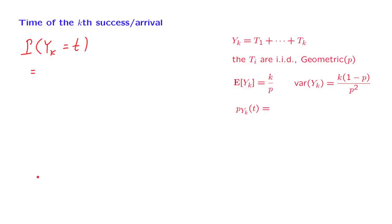Now what is this event here? This is the event that the kth arrival occurs at time t. So this means that at time t, we have an arrival. But for this to be the kth arrival, we must have k-1 arrivals in the previous time slots, of which there's t-1 of them. The probability that yk is equal to t is the probability that these two events happen: k-1 arrivals in t-1 slots and one arrival at slot number t. So we are looking at the probability that these two events occur.